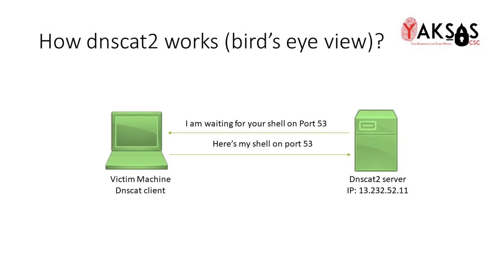DNS-CAT2 completely alters this functionality. DNS-CAT2 runs a DNS-CAT2 server on port 53. So, where a host machine would generally expect a DNS server, our attacking machine would run a DNS-CAT2 server. This server waits for the shell access forwarded by the remote DNS clients. Once this server receives the shell access from a victim machine running a DNS-CAT client, the attacker can then use this access to issue shell commands on the victim machine over port 53.